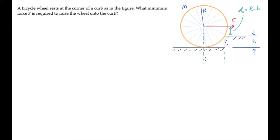And it's useful to have an expression for this distance between the wheel's center and the curb, call it D sub C. We can find it from this right triangle that I'll draw in the light blue color.